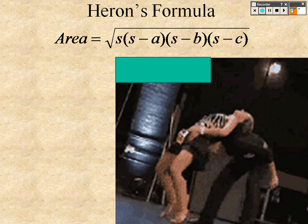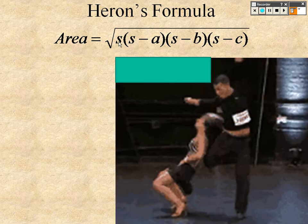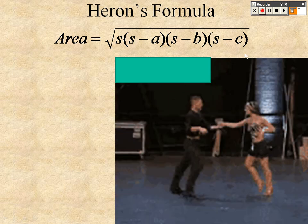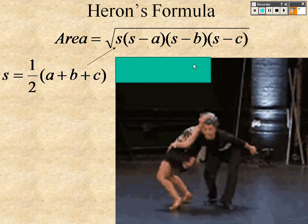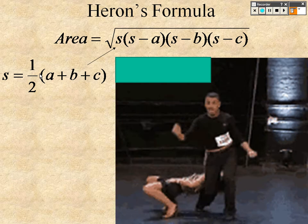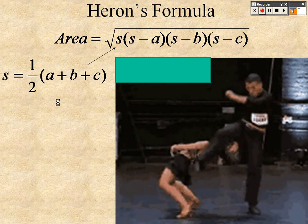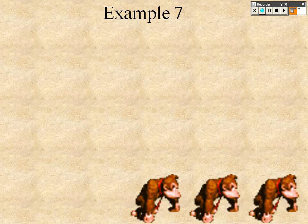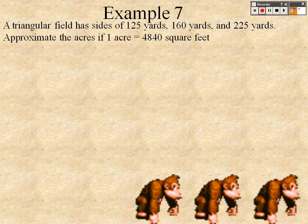Then you have Heron's formula to find the area. It's S times S minus A times S minus B times S minus C, and it's the square root of all of them. But to find S, you need to add up all the sides and then times it by a half. That'll tell you what that is. It's kind of a crazy formula to remember, so people don't use it very often.